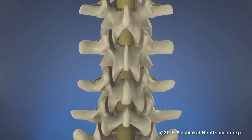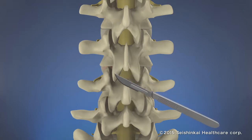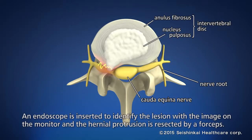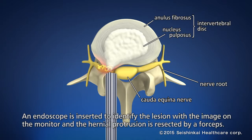Under general anesthesia, the patient lies face down and a 2 cm incision is made on the back. An endoscope is inserted to identify the herniated part on the image from the endoscope. Using a special tool without an incision in the muscle, the herniated tissue is resected.